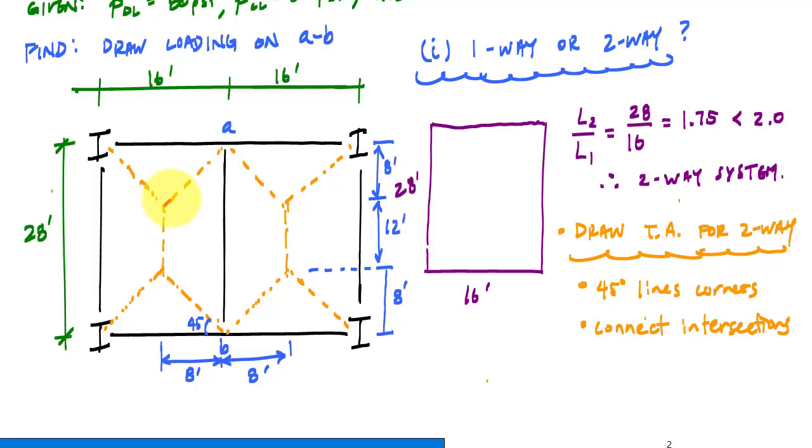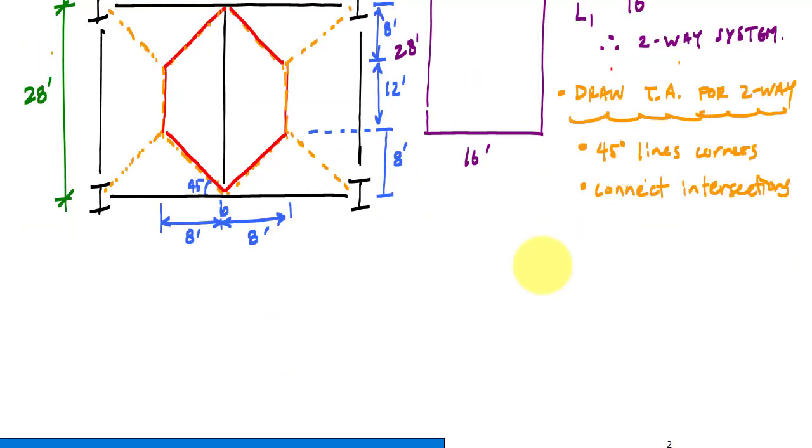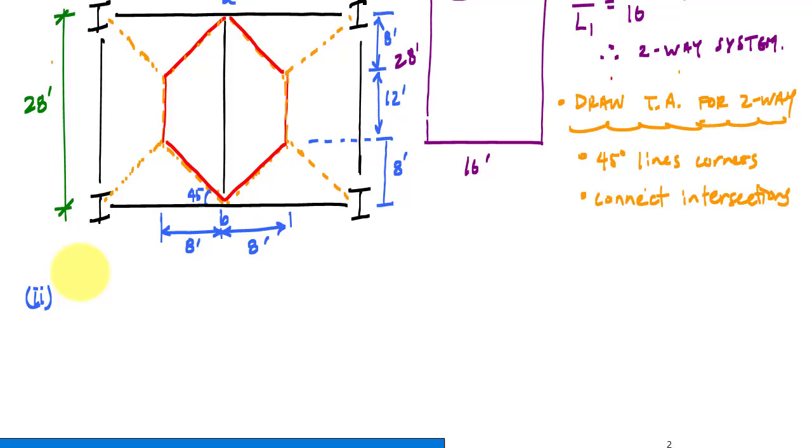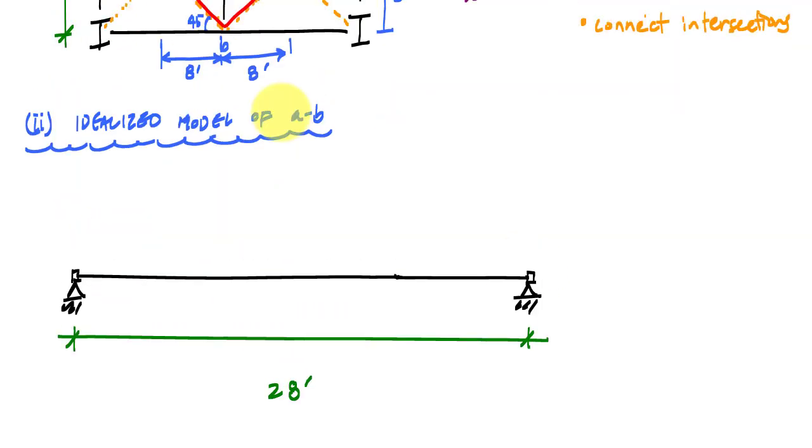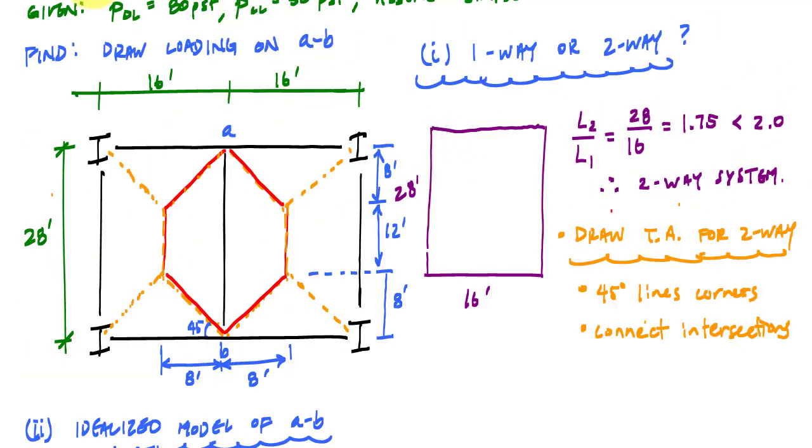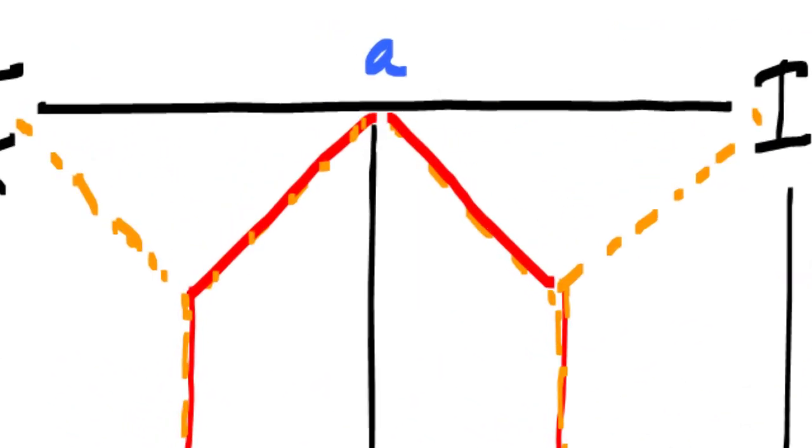So the next part of the process is modeling member AB, and we know member AB is 28 feet long and is pin connected at its ends, so no big deal there. So to calculate distributed loading, the distributed load is pressure times the tributary width. Now my tributary width is not constant.